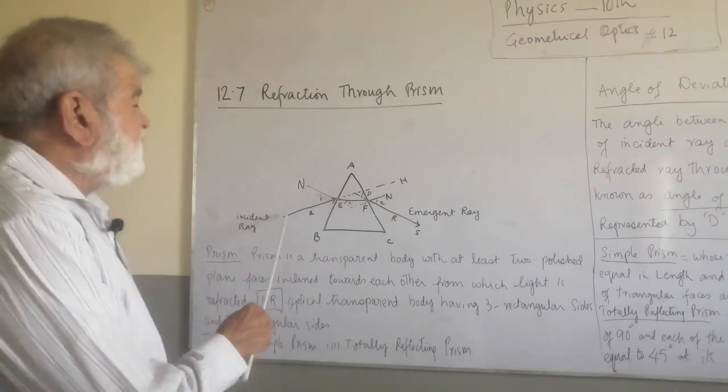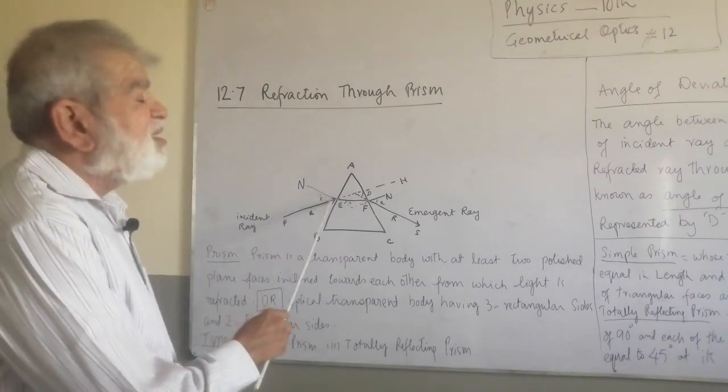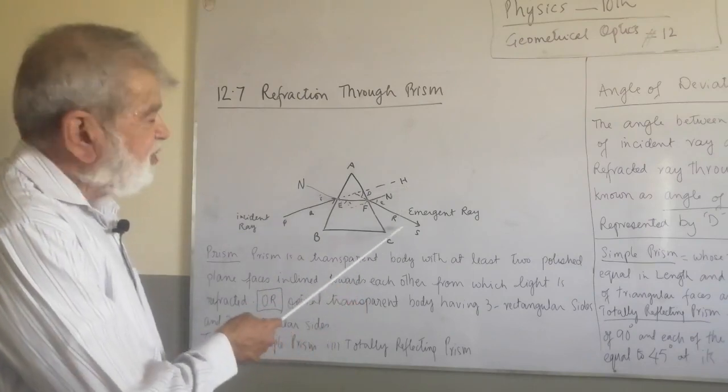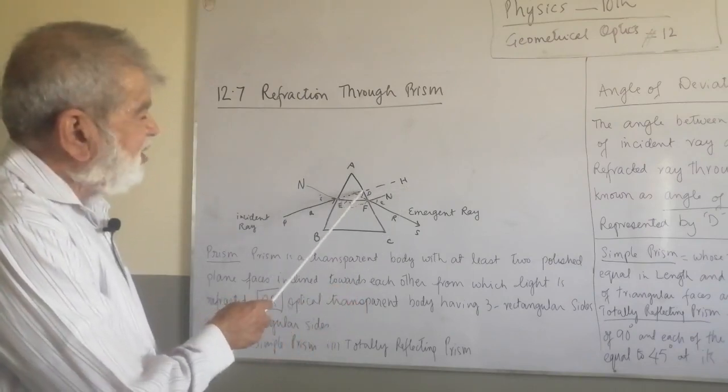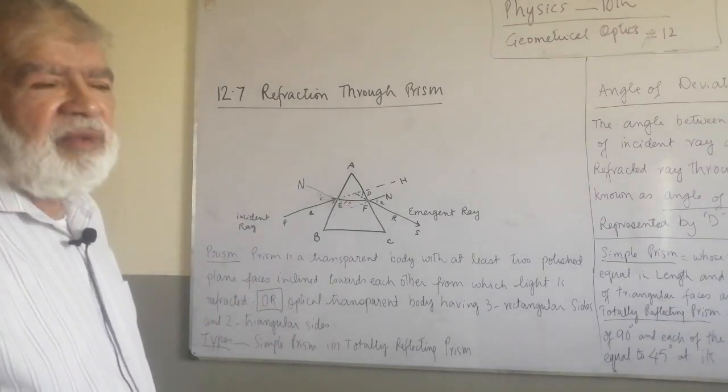If you extend this original path of the ray, incident ray PE, towards H and the emergent ray, you extend it towards this point. Then angle D which is formed is known as angle of deviation.